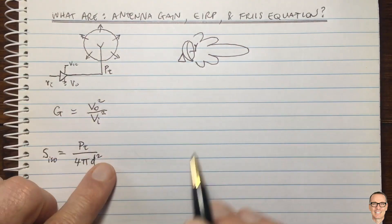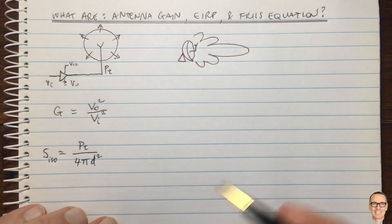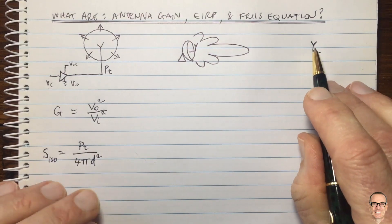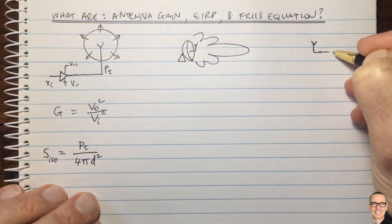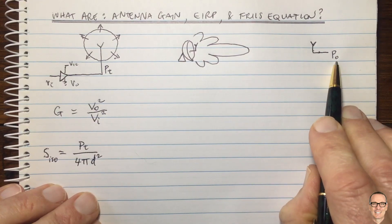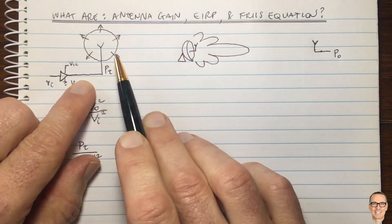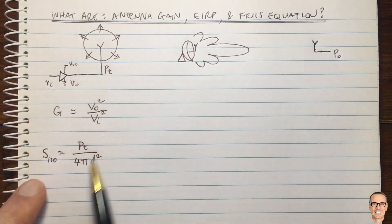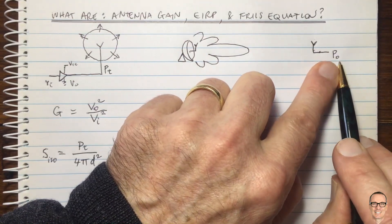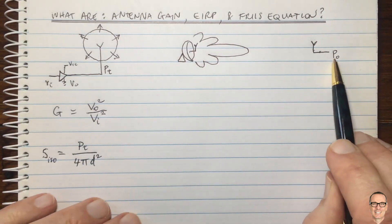How do we quantify antenna gain and get a formula for it? Let's think about the receiver antenna. It produces an electrical power output going into the receiver circuit — we'll call this PO. So we have PT coming in as electrical power, it radiates an electromagnetic wave with a power density, and that hits the receive antenna and comes out as electrical power PO into the receiver circuit.